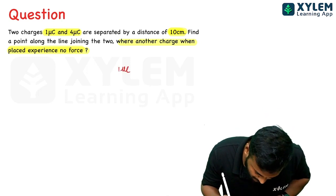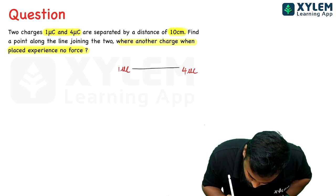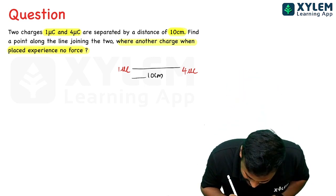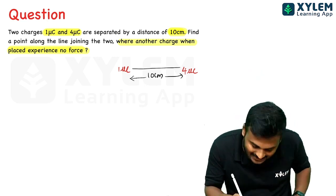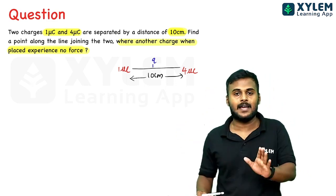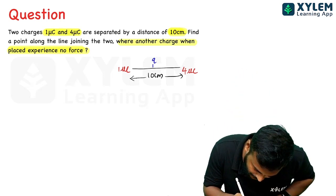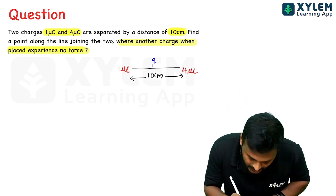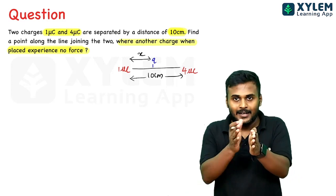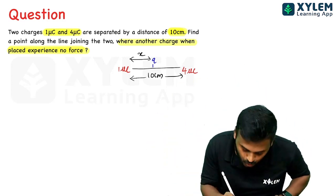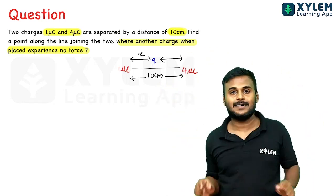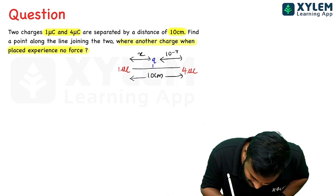Two charges are 1µC and 4µC. These two charges are 10 cm apart. We place the third charge q at distance x from the 1µC charge. The distance from q to the 4µC charge will then be (10 - x). The total distance is 10 cm.